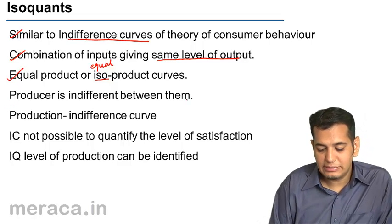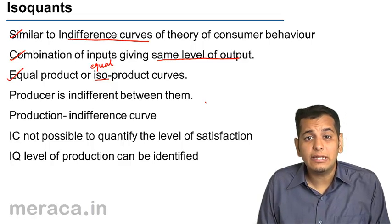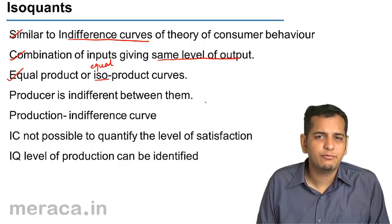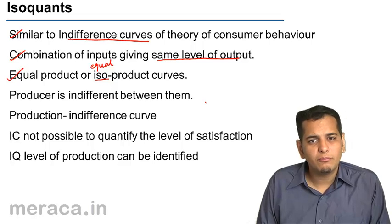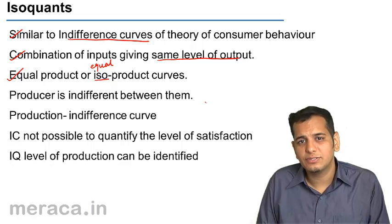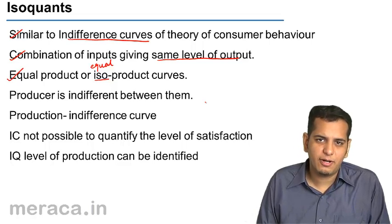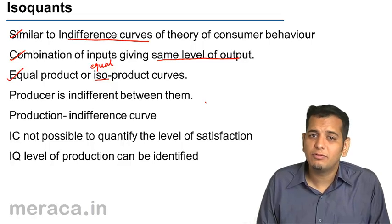So the producer is indifferent between them. Like in indifference curves, the consumer is indifferent amongst choosing combinations of goods — because every combination gives him the same level of satisfaction. Same is the case here. The producer also becomes indifferent in employing any combination of factors of production, because all combinations give him the same level of output.